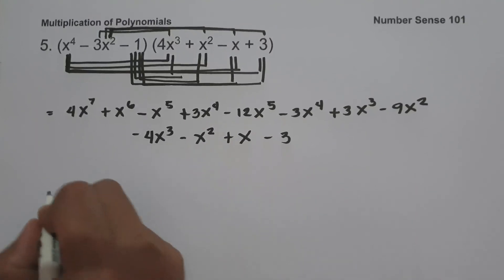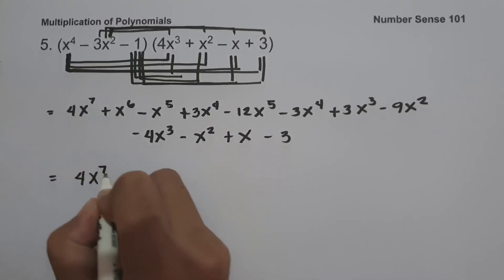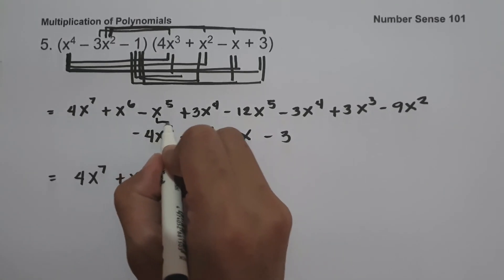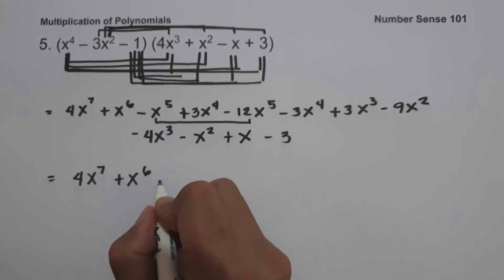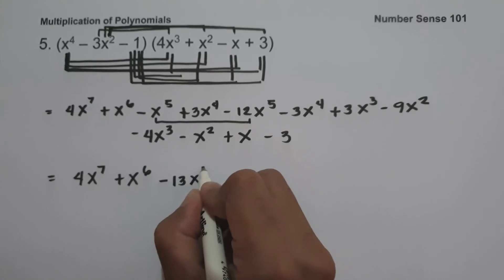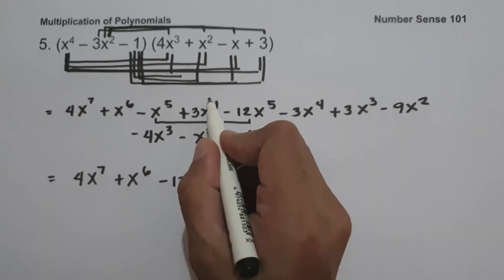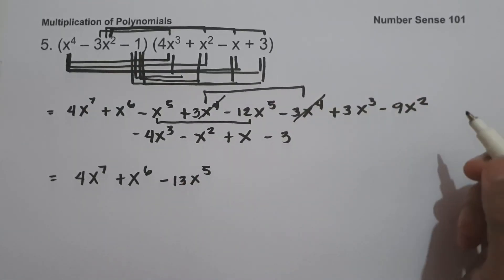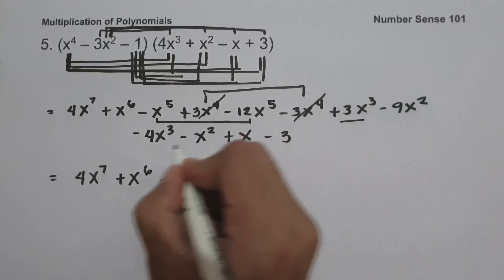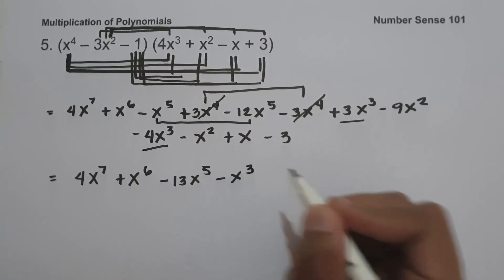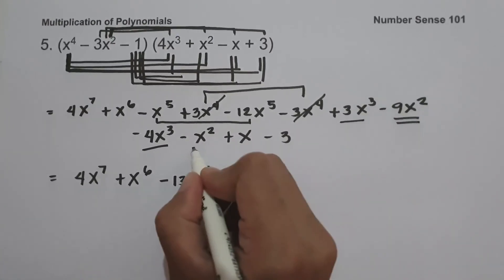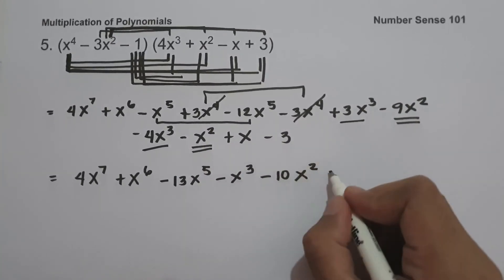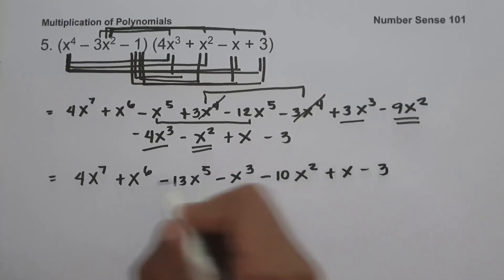So to simplify, let us combine like terms: 4x raised to 7, plus x raised to 6. Negative x raised to 5 minus 12x raised to 5 is negative 13x raised to 5. Then 3x raised to 4 minus 3x raised to 4 is 0, so we cancel that. Then 3x cubed minus 4x cubed is negative x cubed. Negative 9x squared minus x squared is negative 10x squared. And then x minus 3. This will be our answer.